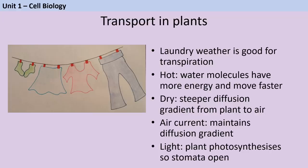Speaking of xylem and transpiration, the best conditions for transpiration are what you could think of as good laundry weather — when it's hot, dry, light, and there's lots of air movement. When it's warm, water molecules have more energy so they evaporate more quickly. When it's dry outside, there's a steeper concentration gradient from the water in the plant leaf to the dry air. Wind or air current moves water away from the plant, maintaining that concentration gradient so water keeps moving out. When it's light, the plant does more photosynthesis and keeps stomata wide open for maximum carbon dioxide uptake, which also allows water to move out as part of transpiration.